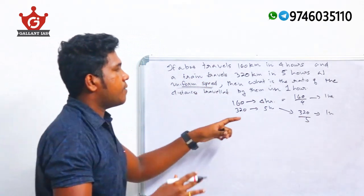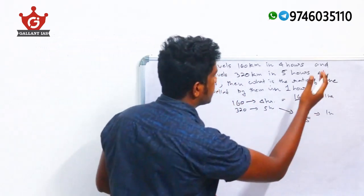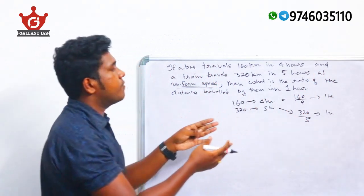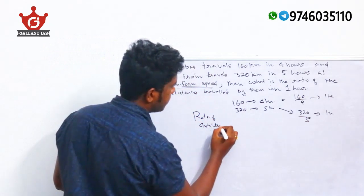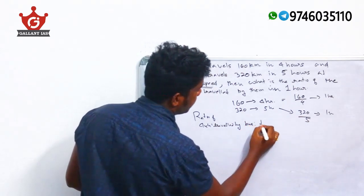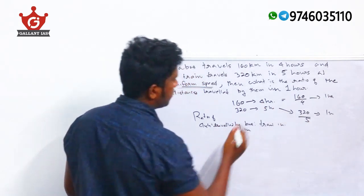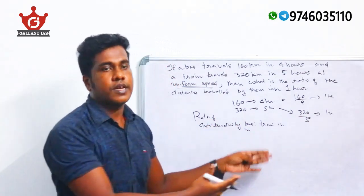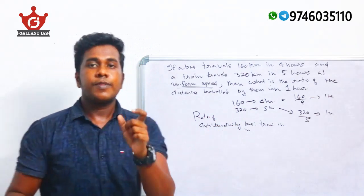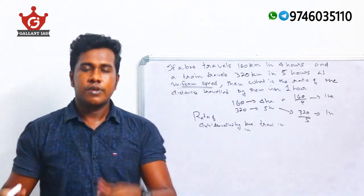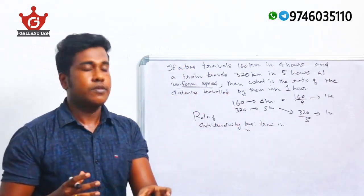We need to find the ratio of the distance traveled in 1 hour — bus to train. The bus covers 160 ÷ 4 = 40 km in one hour, and the train covers 320 ÷ 5 = 64 km in one hour.